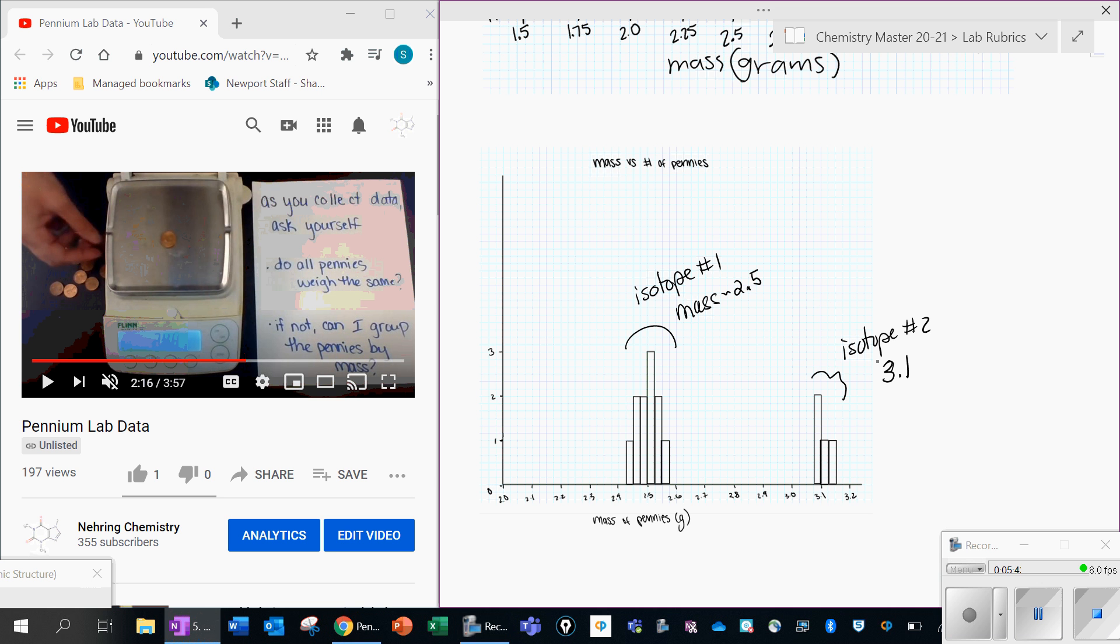What happens with pennies, and you can kind of research this, if you look at the years, you'll notice that all of the heavier ones end up being pre-1982. This is where the year becomes useful. And these are all post-1982. And so what happened is they changed what the penny was made of around 1982. So before then, they were made of copper, which is denser than zinc. So now pennies are made of mostly zinc. So they're a little bit lighter.